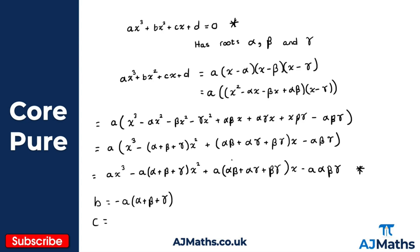C would be equal to a lots of alpha beta plus alpha gamma plus beta gamma. And then finally d is going to be equal to minus a alpha beta gamma.